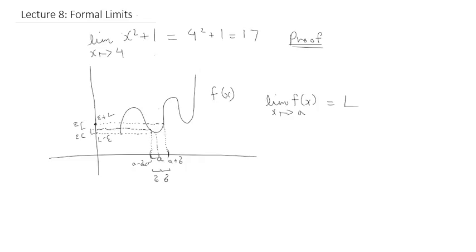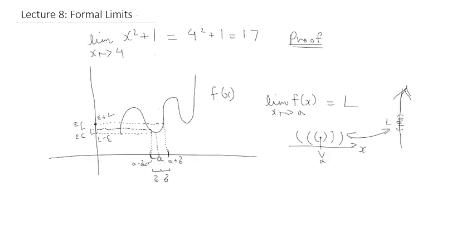As we get closer and closer to a, the open interval is getting closer and closer to the point a as well. On the y-axis, we know there's a limit L and we're getting closer and closer to that. The key thing to understand is that this is happening simultaneously — if you get one step closer on the x-axis, we get one step closer to L. So there has to be a relation between delta and epsilon.